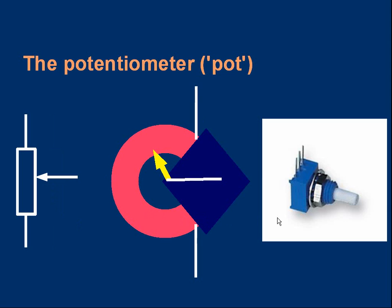If you opened it up, the basic construction is a track, some high resistance material, often carbon-based, in a curved arc with a gap.